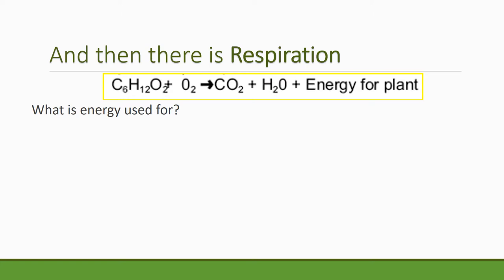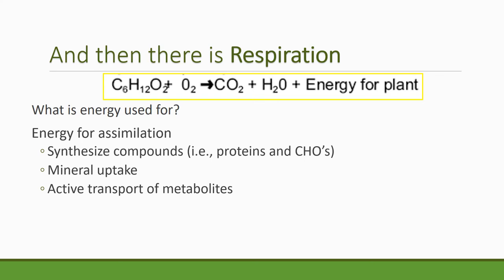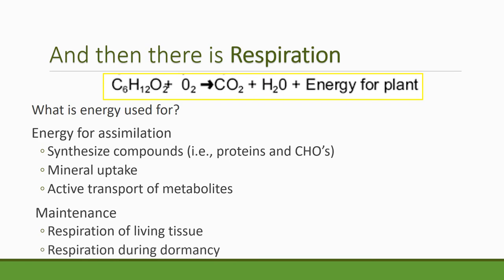On the other side of the coin, let's talk about respiration. Respiration is when you take those soluble carbon compounds or soluble sugars, add some oxygen to them, and create carbon dioxide, water, and energy for the plant — but also for the animal. Respiration in the plant is the same as for us: we take sugars and we turn them into energy. What do plants use energy for? They use it for assimilation — to synthesize compounds such as proteins and carbohydrates, to get minerals out of the soil, uptake minerals and water, and active transport of minerals and sugars throughout the plant body. Those are all activities of assimilation — the everyday growth of the plant. There's also quite a lot of energy needed for maintenance respiration for living tissue, the action of the cells, and also respiration during dormancy.